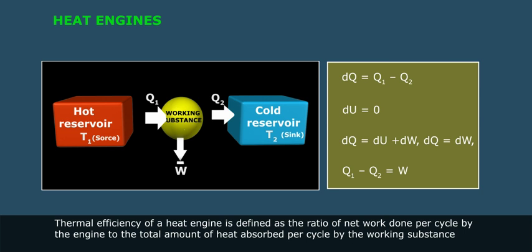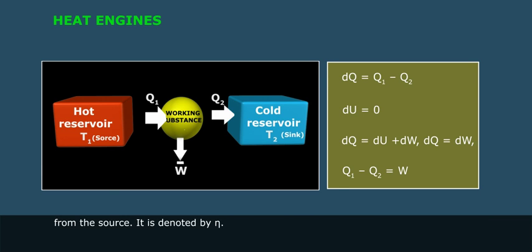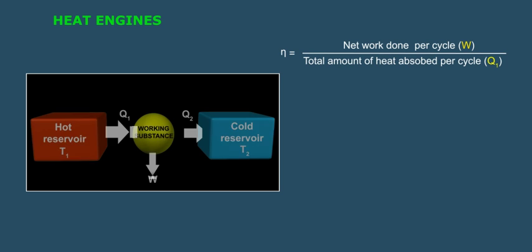Thermal efficiency of a heat engine is defined as the ratio of net work done per cycle by the engine to the total amount of heat absorbed per cycle by the working substance from the source. It is denoted by eta. Eta is equal to network done per cycle W by total amount of heat absorbed per cycle Q1.